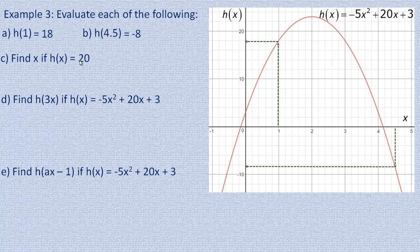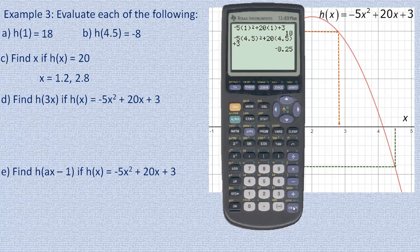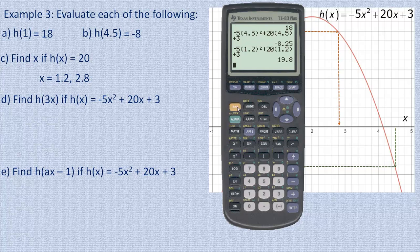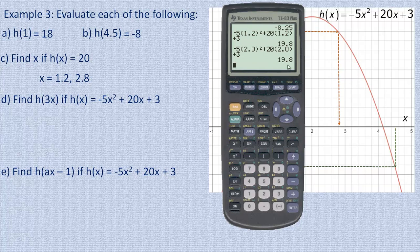Now find x if h of x equals 20. On the graph, 20 is on the vertical axis, so we go across to where it touches the graph — and it actually touches in two places. One is around x equals 1.2 or 1.3, and the other is around x equals 2.8. We can check these: substituting 1.2 gives approximately 19.8, and substituting 2.8 also gives close to 20. Those x values produce values very close to 20.